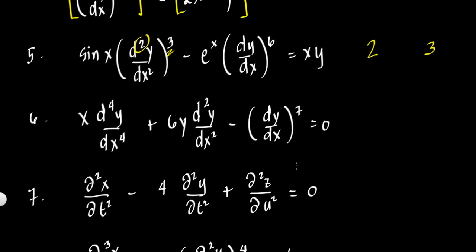Example 6: We have x times the 4th derivative of y with respect to x, plus 6y times the 2nd derivative of y with respect to x, minus (dy/dx)⁷. To find the order, find the highest ordered derivative — that's d⁴y/dx⁴, so the order is 4. The 4th derivative here has no additional power and no fractions, so the degree is 1.